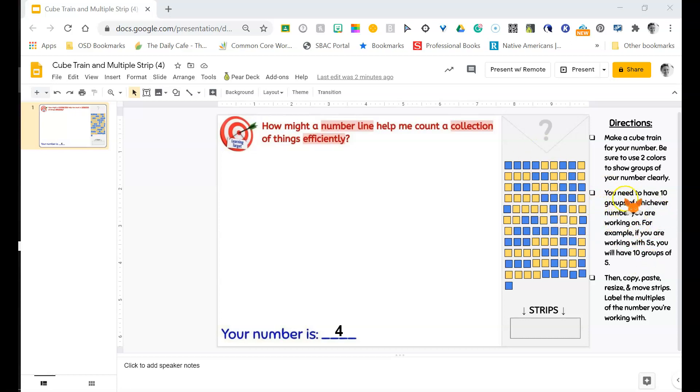Let's look at the next part of the directions. You need to have ten groups of whichever number you are working on. For example, if you are working with fives, you will have ten groups of five.